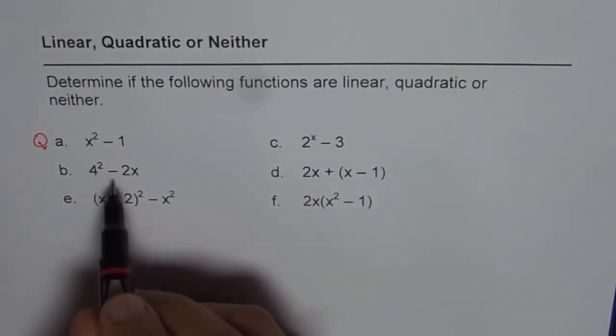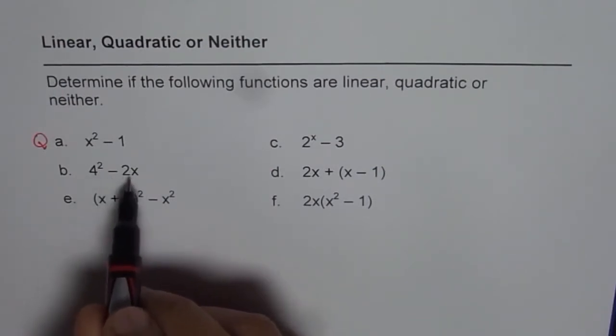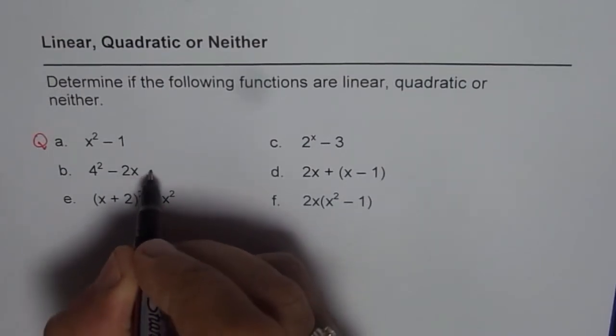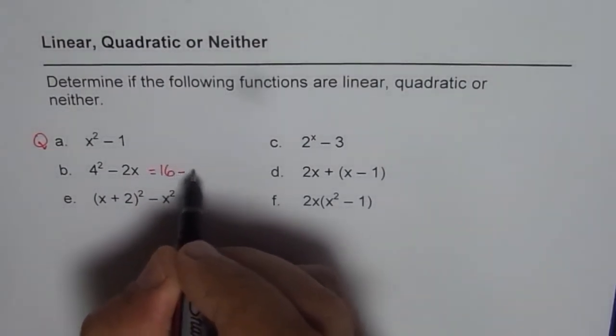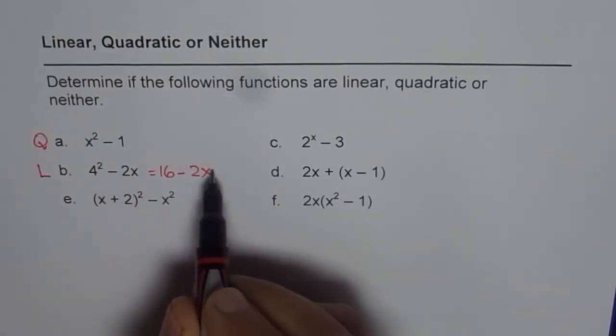B: 4² - 2x. The square is not with the x but with the constant, right? So it is 16 - 2x. Let me rewrite: 16 - 2x. This function is linear since the exponent for x is 1. The degree of this polynomial is 1.